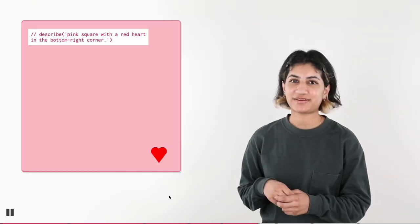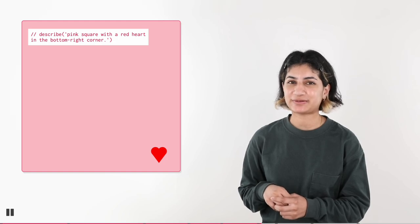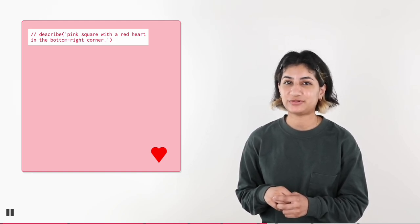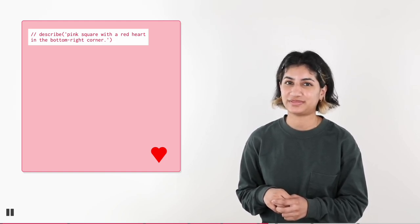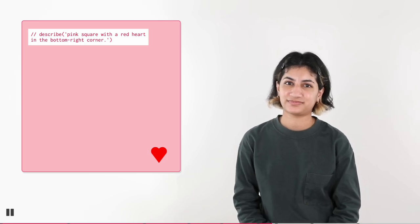Let's make your HTML canvas accessible to people using a screen reader by adding a text description using the describe method. For example: 'Pink square with a red heart in the bottom right corner.'